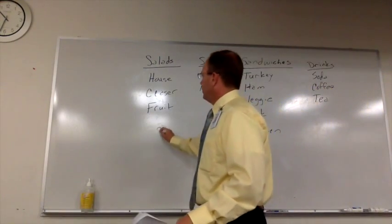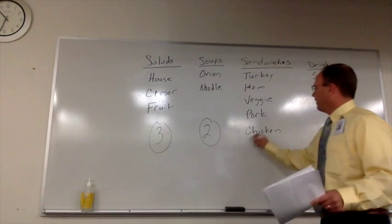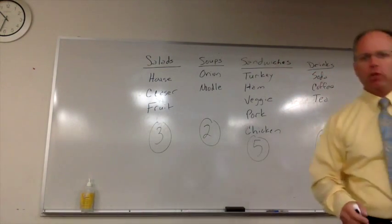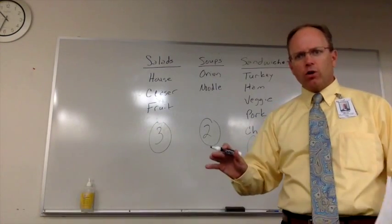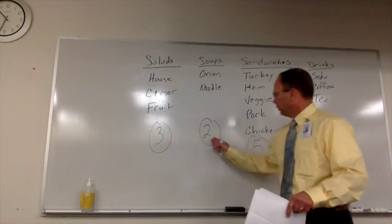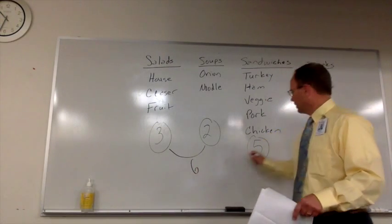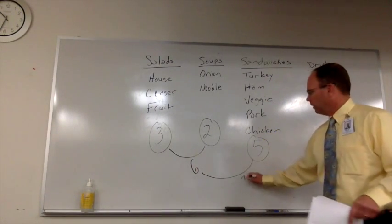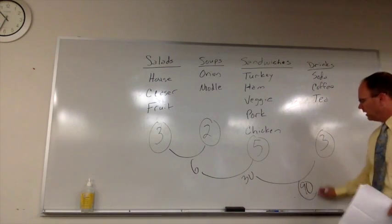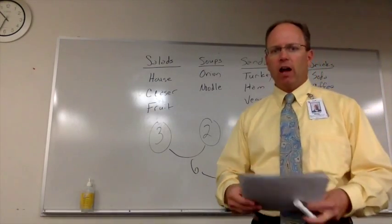So we have three salads to choose from, two soups, five sandwiches, and three different drink options. All you need to do on this problem — and it doesn't matter the order you do it in, because multiplication can go any way — is three times two times five times three. Three times two is six, times five is 30, times three. You have 90 different ways you could choose this special from this cafe.